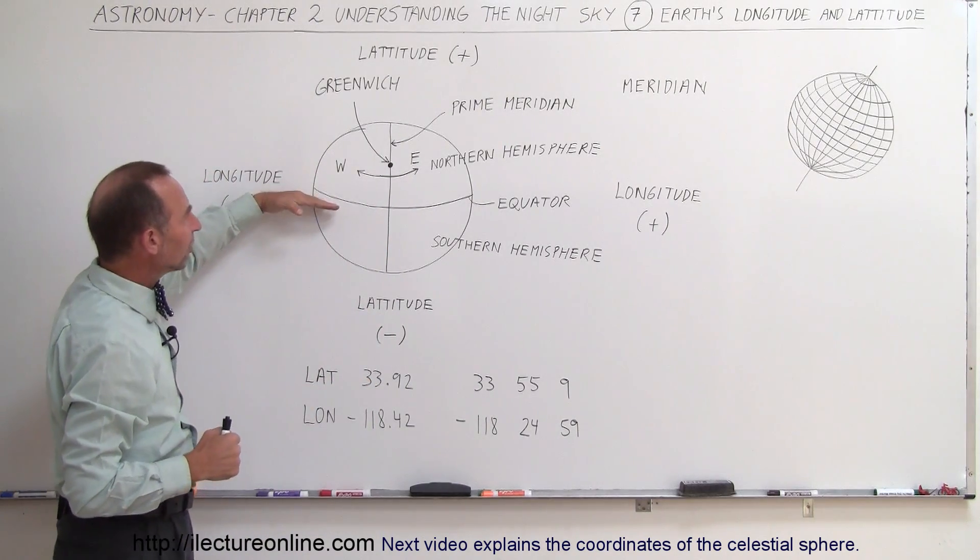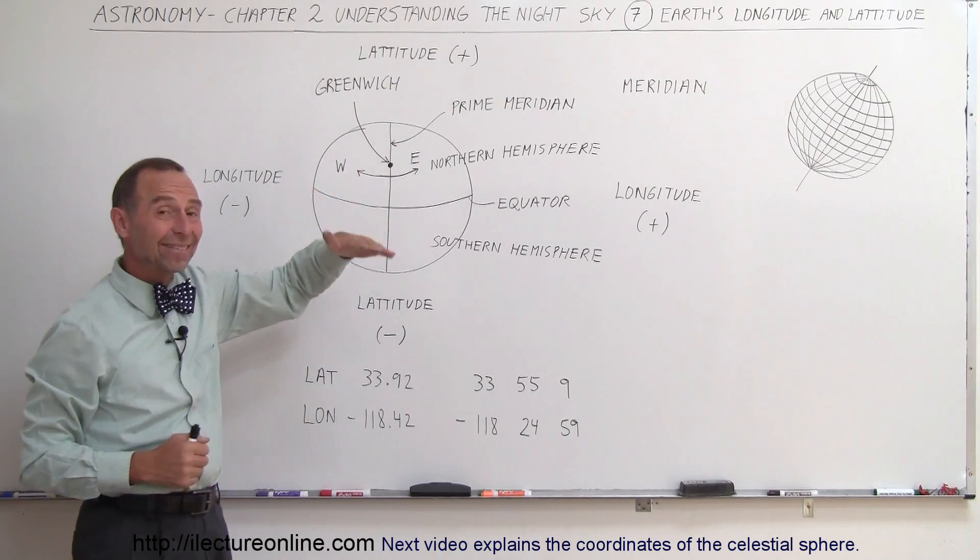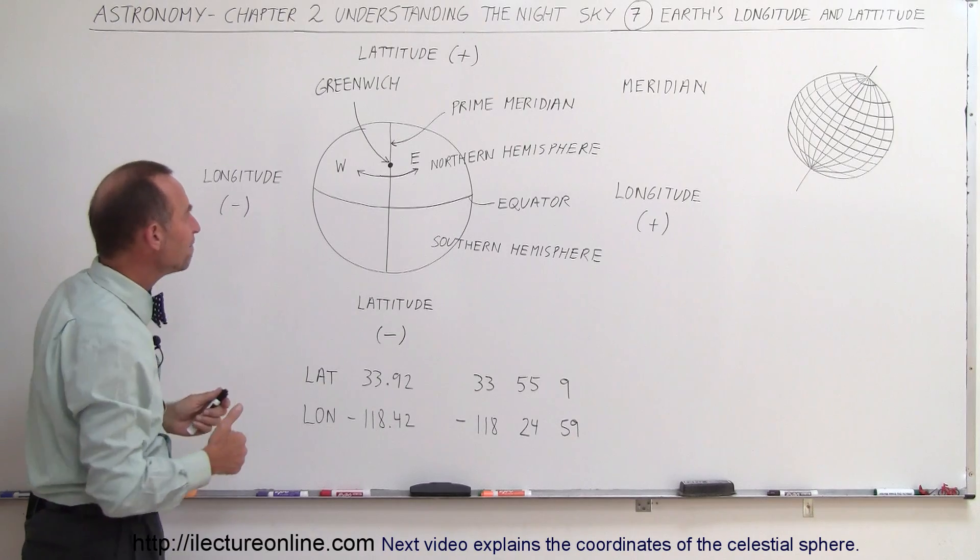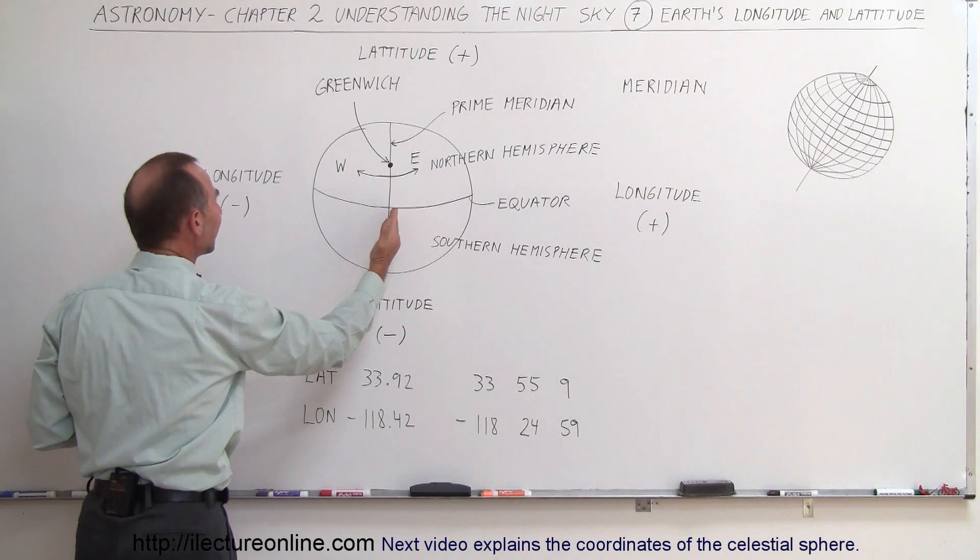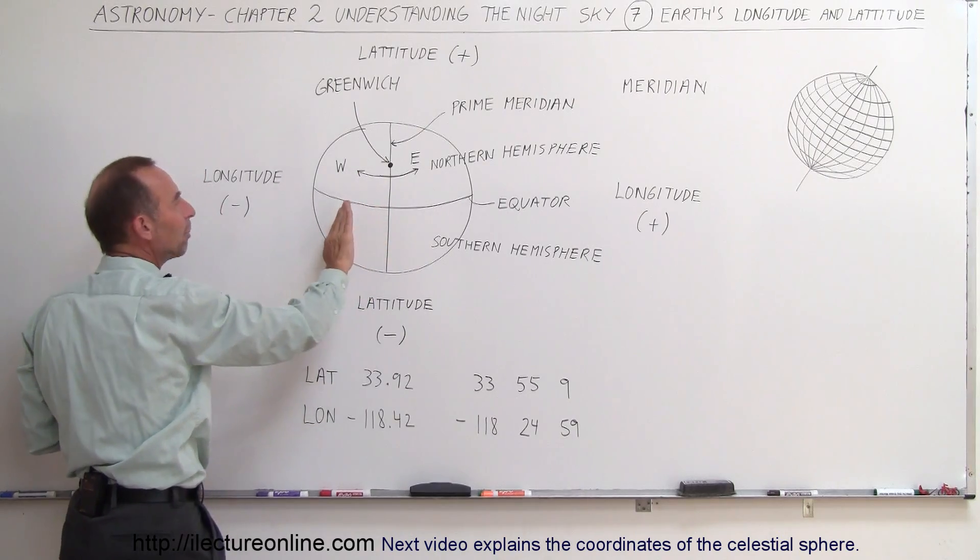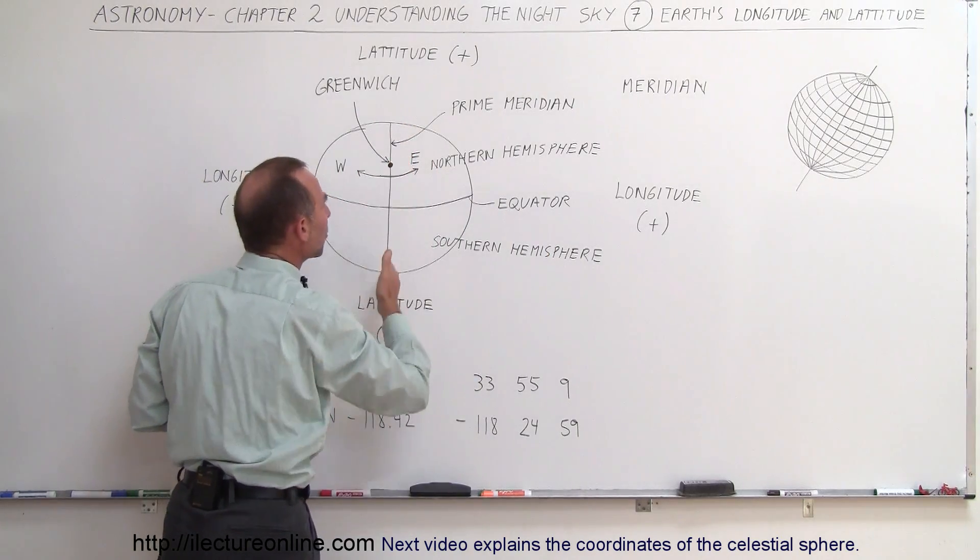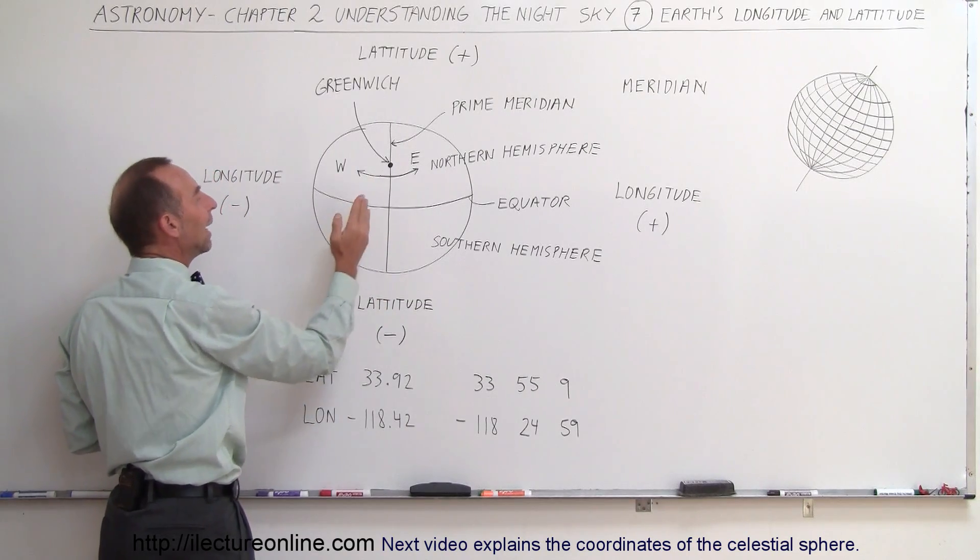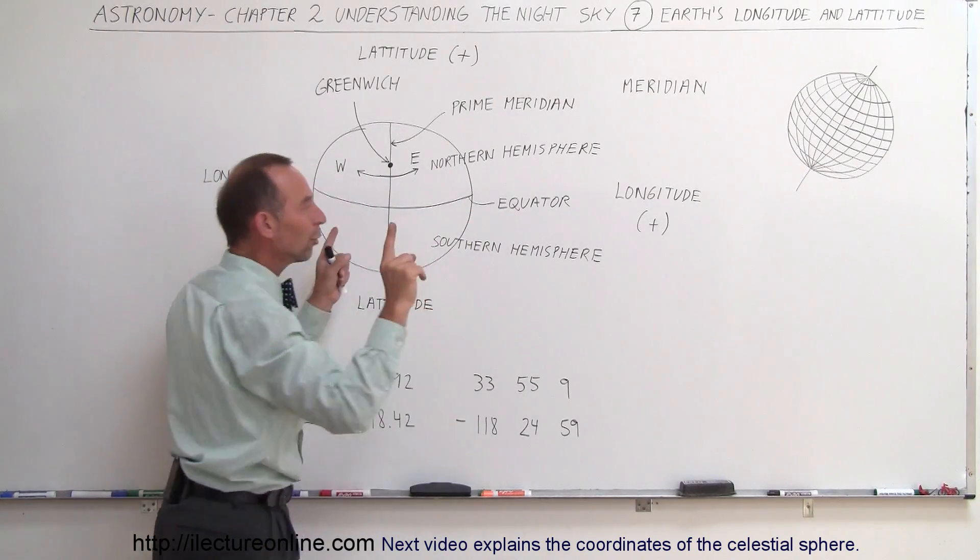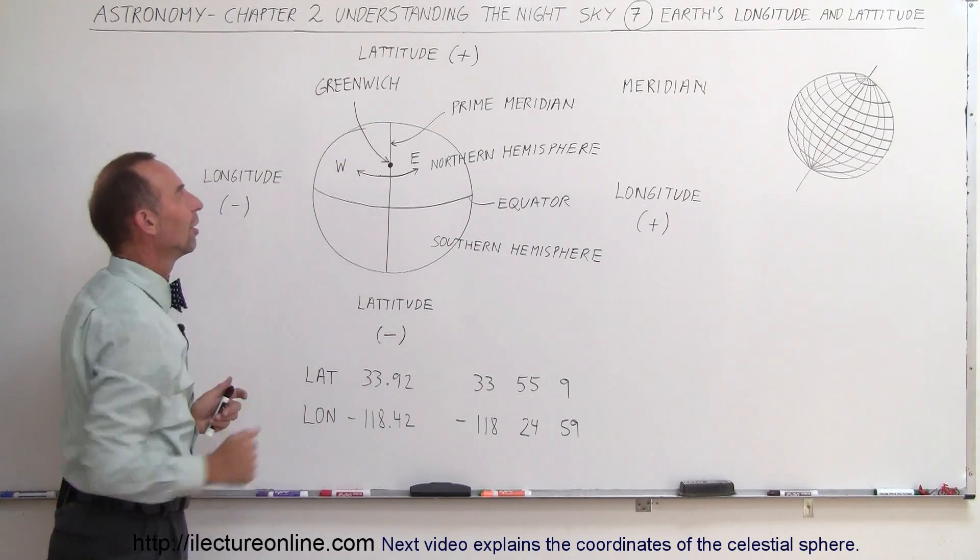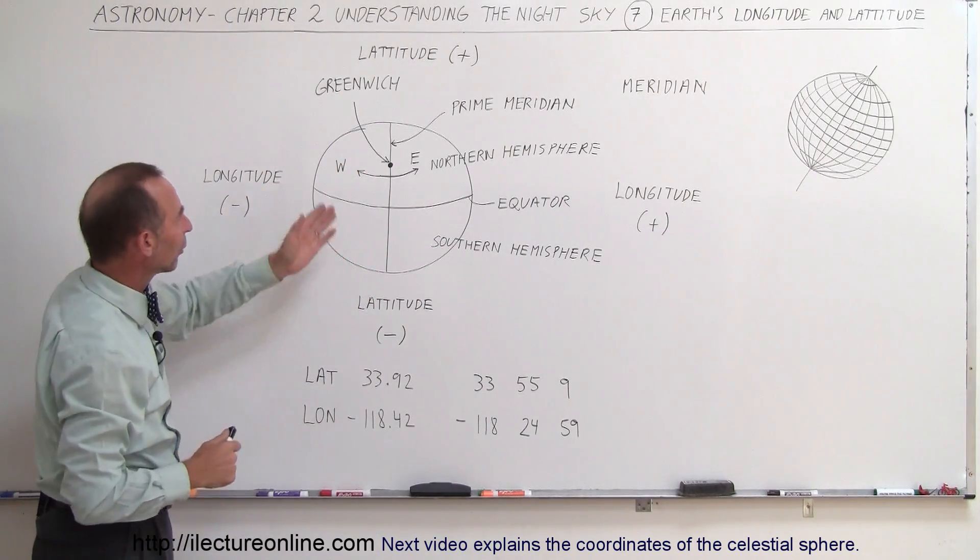The latitude is positive above the equator and negative below the equator. With the celestial sphere, that's exactly the same. The longitude is negative to the west of the prime meridian going through Greenwich and positive to the east of the prime meridian. You can go all the way from 0 to minus 180 and from 0 to positive 180, and those two points meet on the other side of the world, directly opposite of the prime meridian.